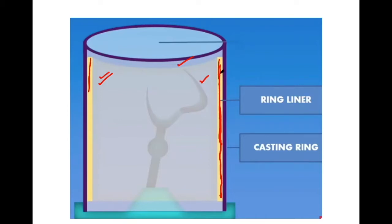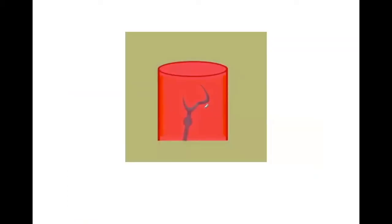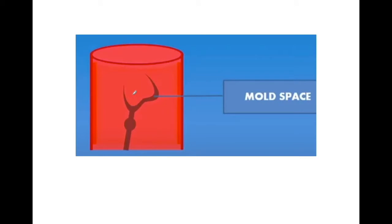Once the investment has set for one hour, it is ready for burnout. We place this investment in the oven. The wax will be removed from the investment material, leaving a resultant hollow mold. For proper elimination of the wax, this mold is placed in the furnace with the sprue hole facing downwards. Because of gravity, the wax will be eliminated from the mold space and once all wax gets melted and lost, this is the hollow mold space which is ready to receive the molten metal.